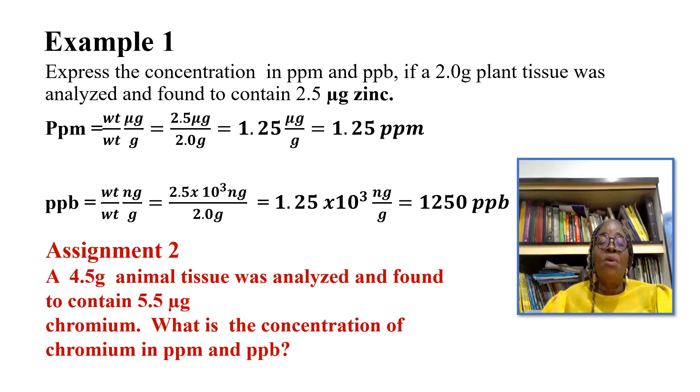And we are told to represent this in parts per billion. In parts per billion, it is represented weight per weight nanograms per gram. And because we have micrograms, we will convert that microgram to nanogram. Therefore we will multiply it by 10 raised to power 3, which gives us 1,250 nanograms per gram, which is equivalent to 1,250 parts per billion. That's one way to express your concentration in ppm and ppb.